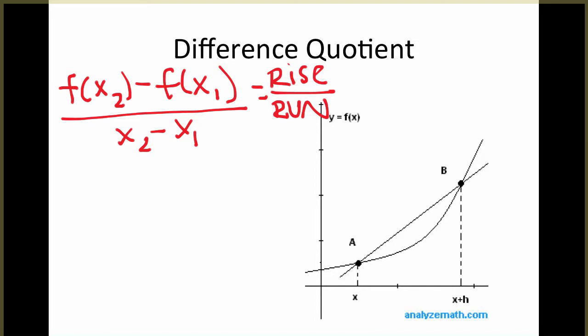Well, the difference quotient is also another method of finding the average rate of change, but rather than getting simply one number, we're getting an equation based on how big the interval is.